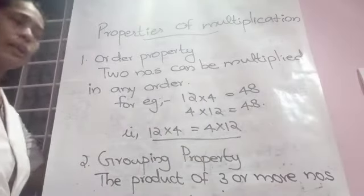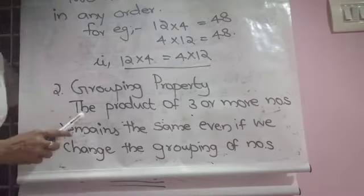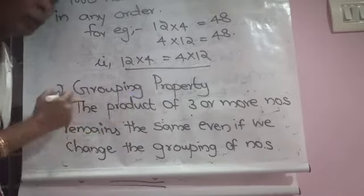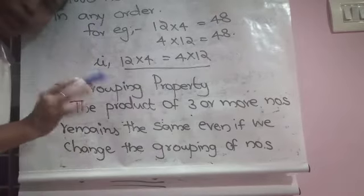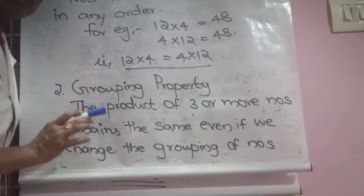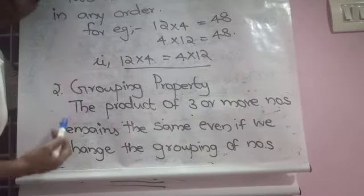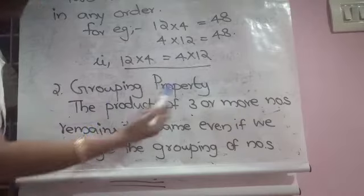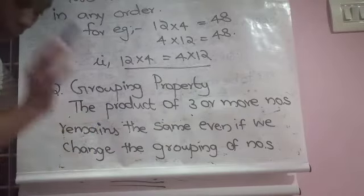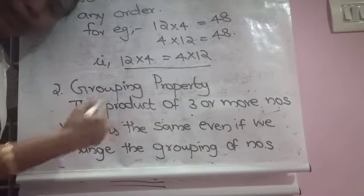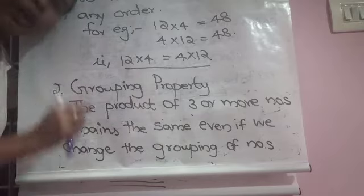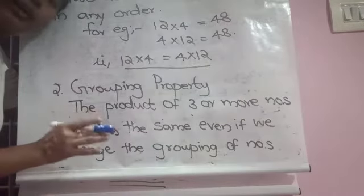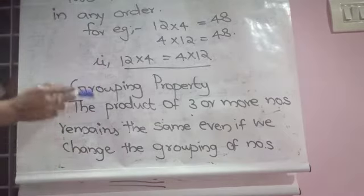Our second property is grouping property, which applies to a minimum of 3 numbers. When there are only 2 numbers, there is no need for grouping — just multiply them. But grouping property is applicable for 3 or more numbers. The product of 3 or more numbers remains the same even if we change the grouping. If you change the grouping of numbers, the numbers in a group change, but you will still get the same product. That is called grouping property.